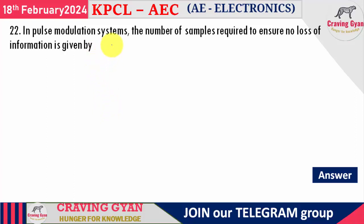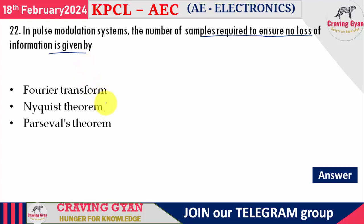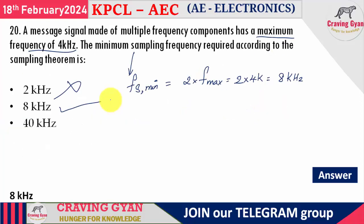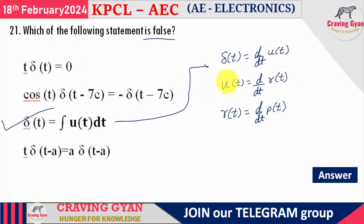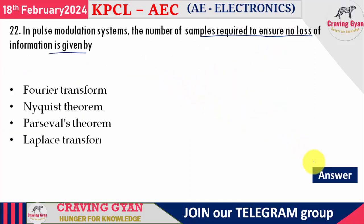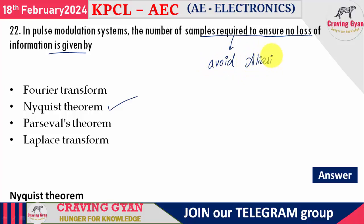Twenty-second question: in a pulse modulation system, the number of samples required to ensure no loss of information is given by which theorem — Fourier transform, Nyquist theorem, Poisson's theorem, or Laplace theorem? The sampling theorem is defined by the Nyquist theorem. Option B is correct. Aliasing means overlapping of higher frequency signals onto lower frequency signals, causing loss of information that cannot be retrieved.